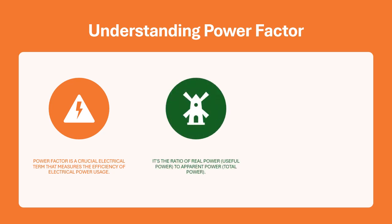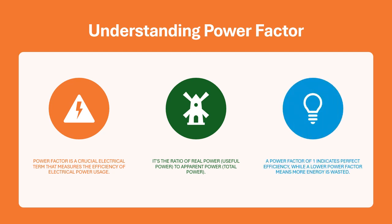It's the ratio of real power (useful power) to apparent power (total power). A power factor of 1 indicates perfect efficiency, while a lower power factor means more energy is wasted.